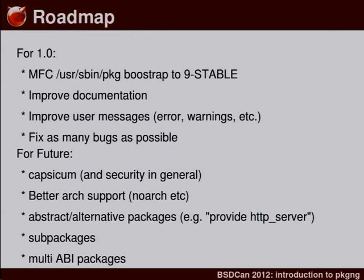On the roadmap: Package NG will live in the ports tree — it will never go into base. But base needs to be able to have Package NG. So we created a bootstrap which is just a package binary: if Package NG is not installed, it fetches it from the official repository and installs itself. You just install your new system, type 'package install something', and if Package NG isn't there, it fetches and installs it, then does the installation you asked for.